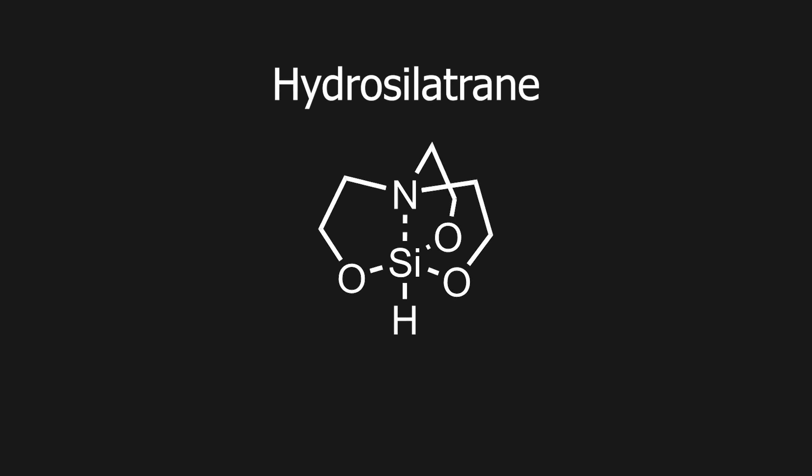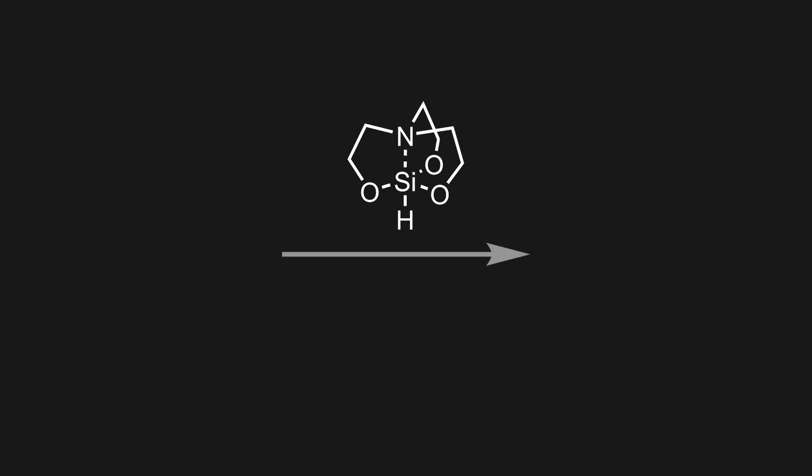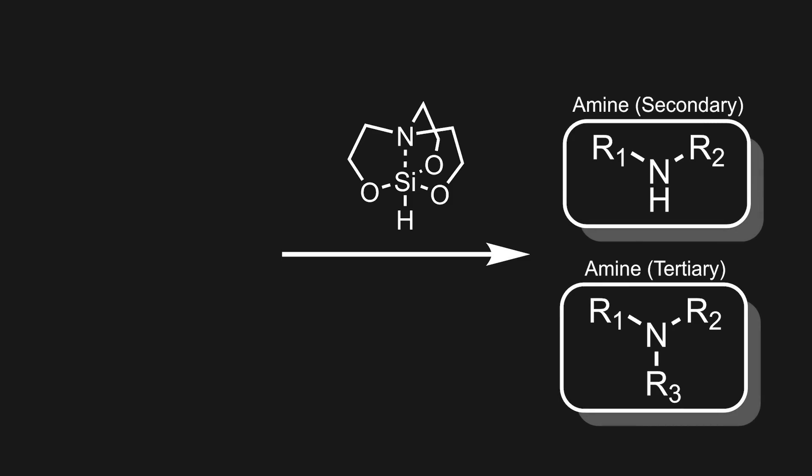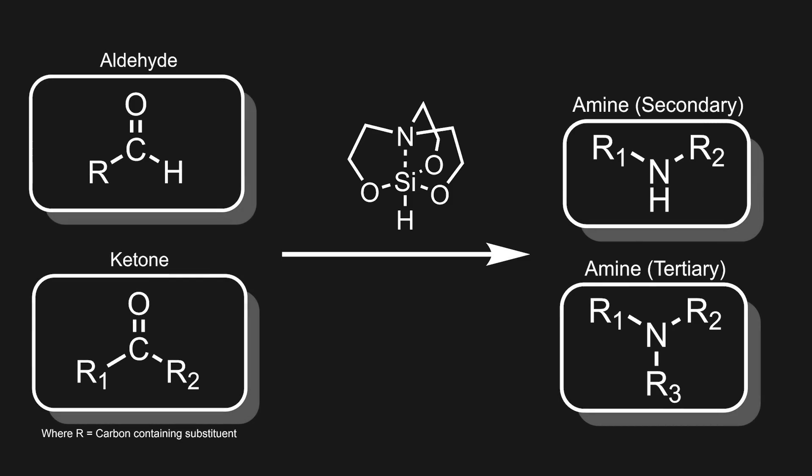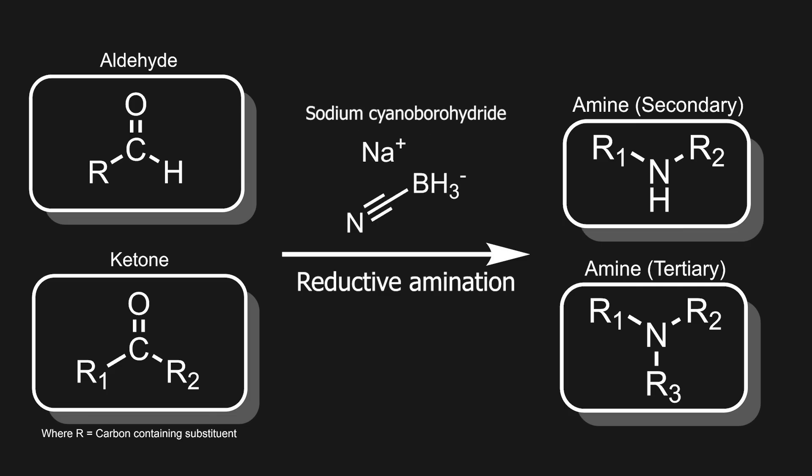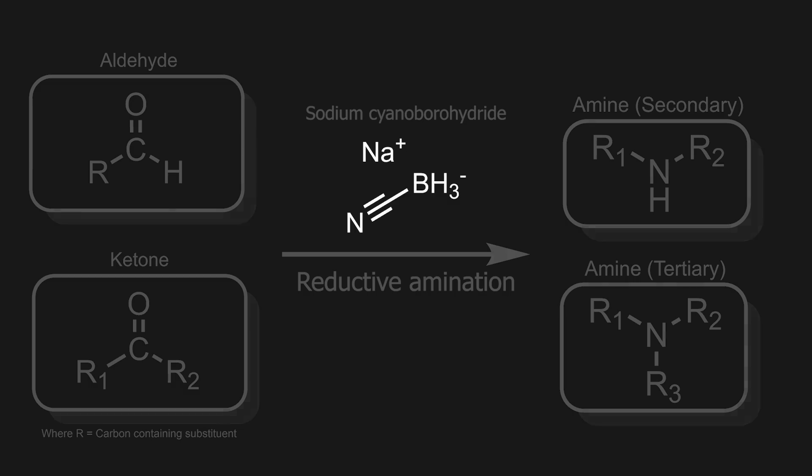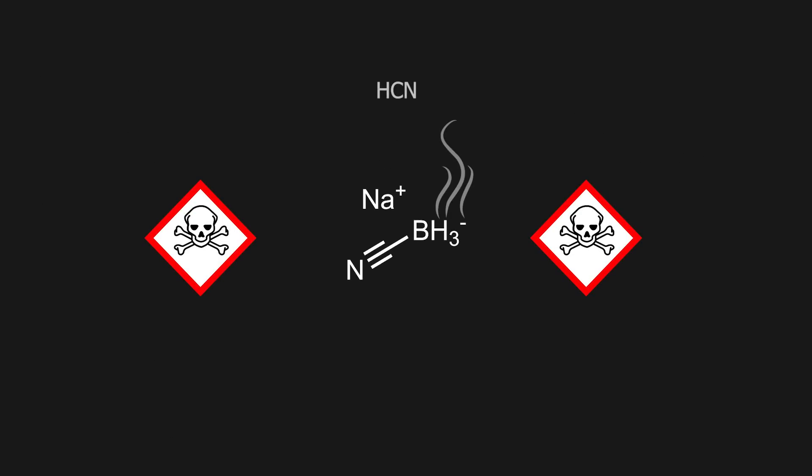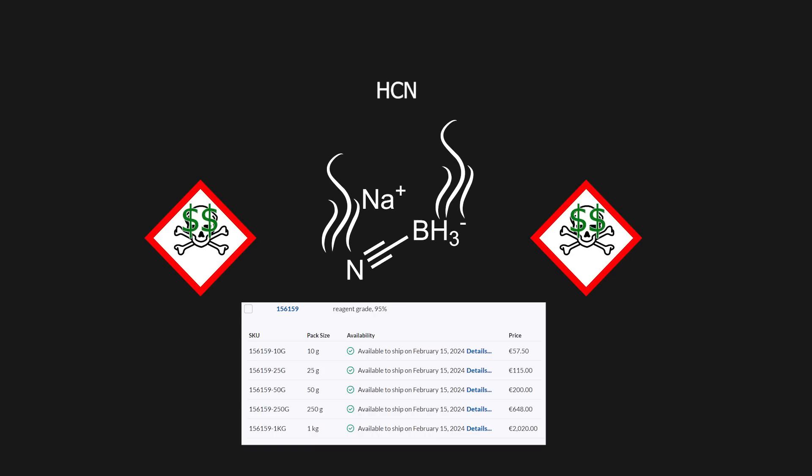Hydrosilotrane is a relatively new reagent found to be very useful in the synthesis of secondary and tertiary amines from aldehydes and ketones via reductive amination. Reductive aminations are commonly used in chemistry to achieve this type of conversion, but often use the reagent sodium cyanoborohydride, which is toxic and can release hydrogen cyanide during the workup. Besides, it is kind of expensive.